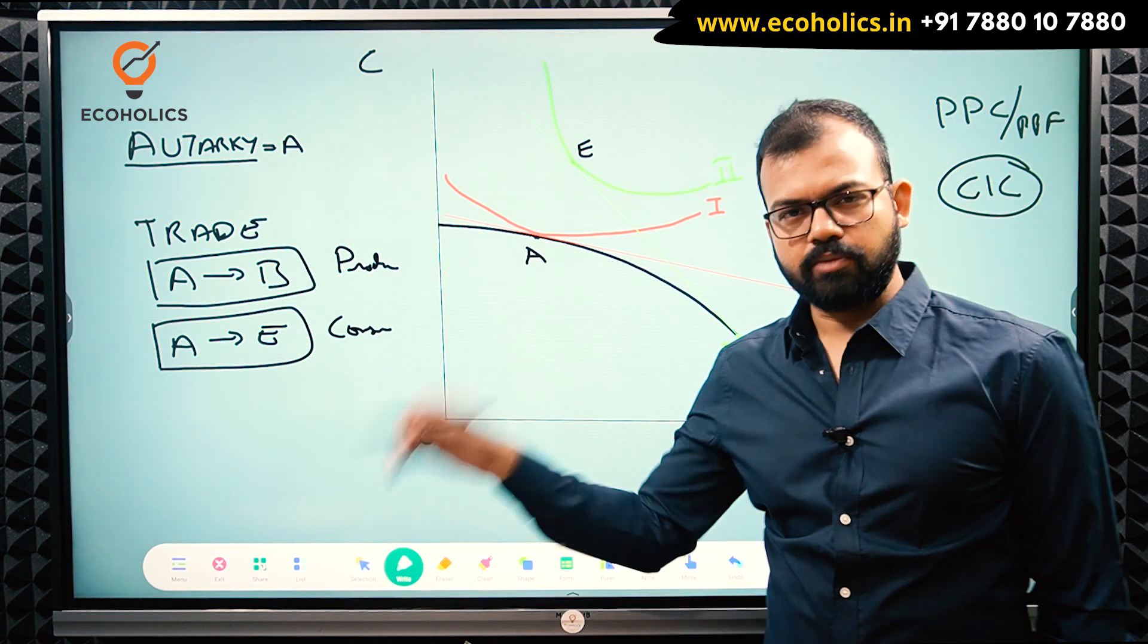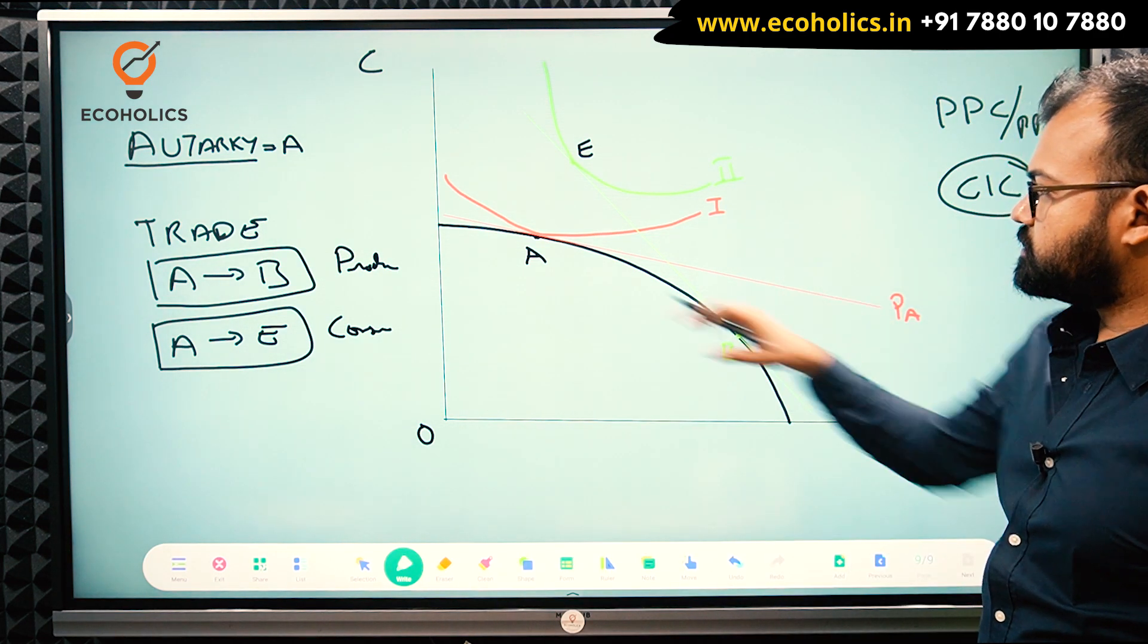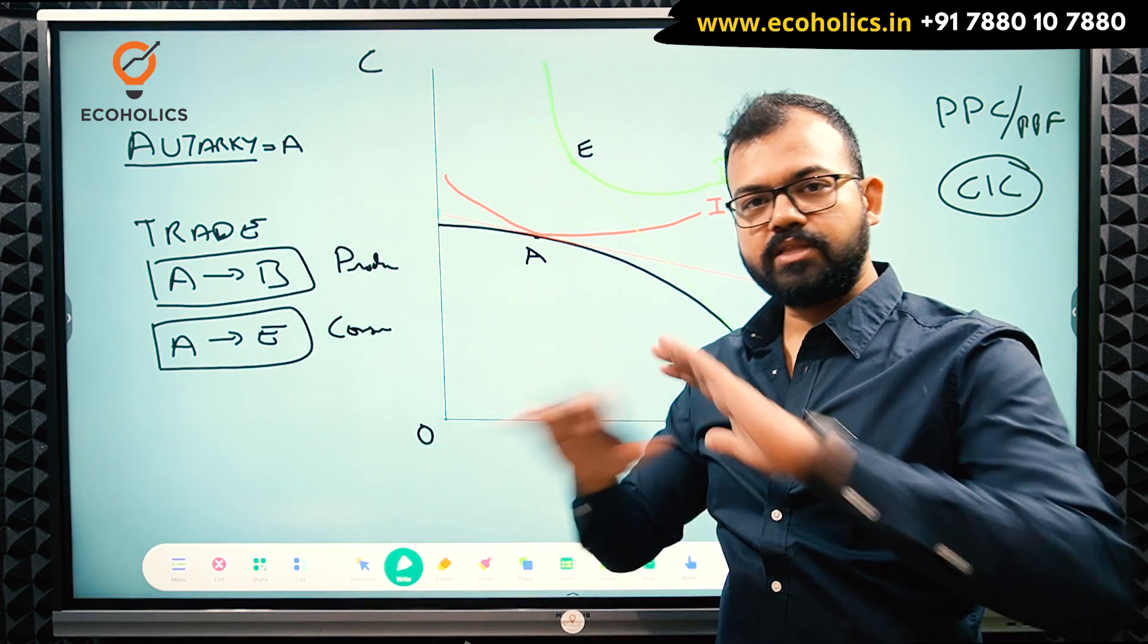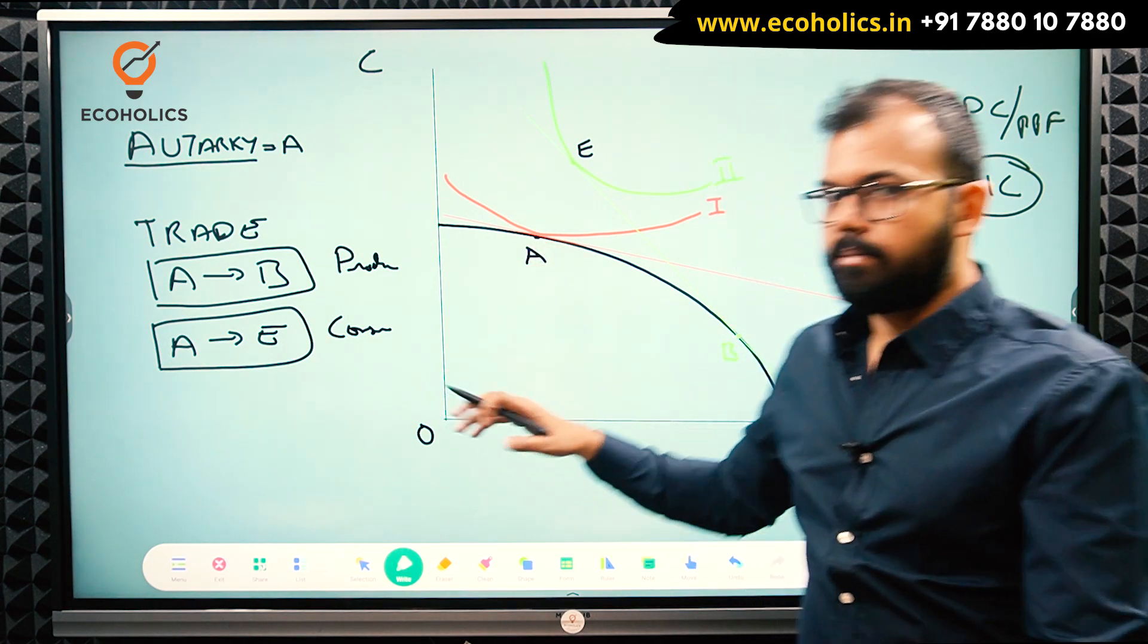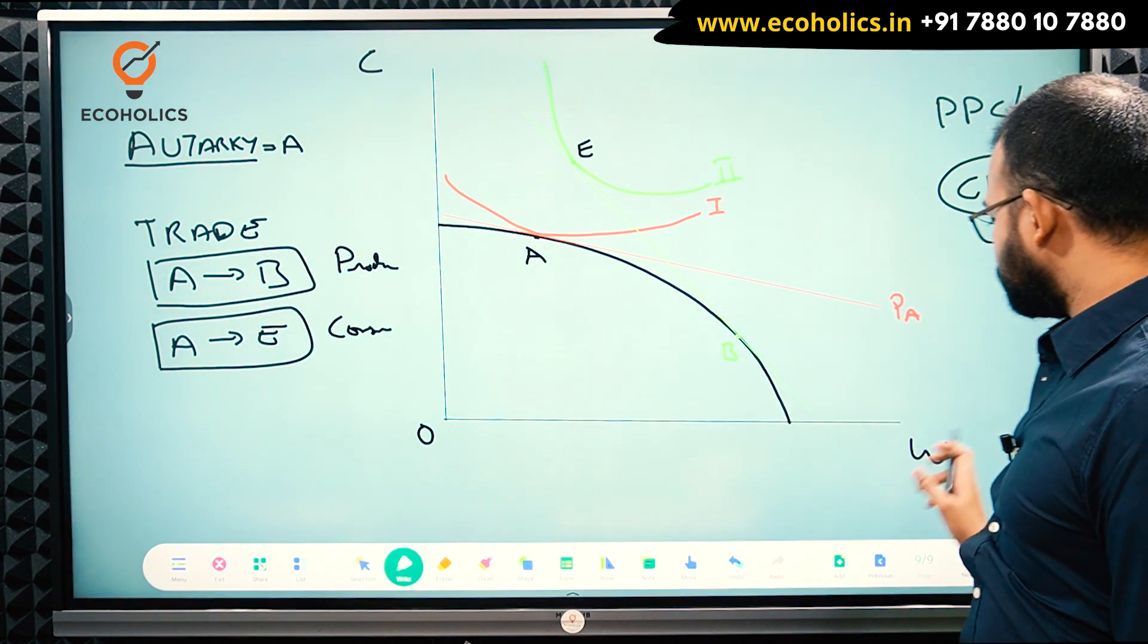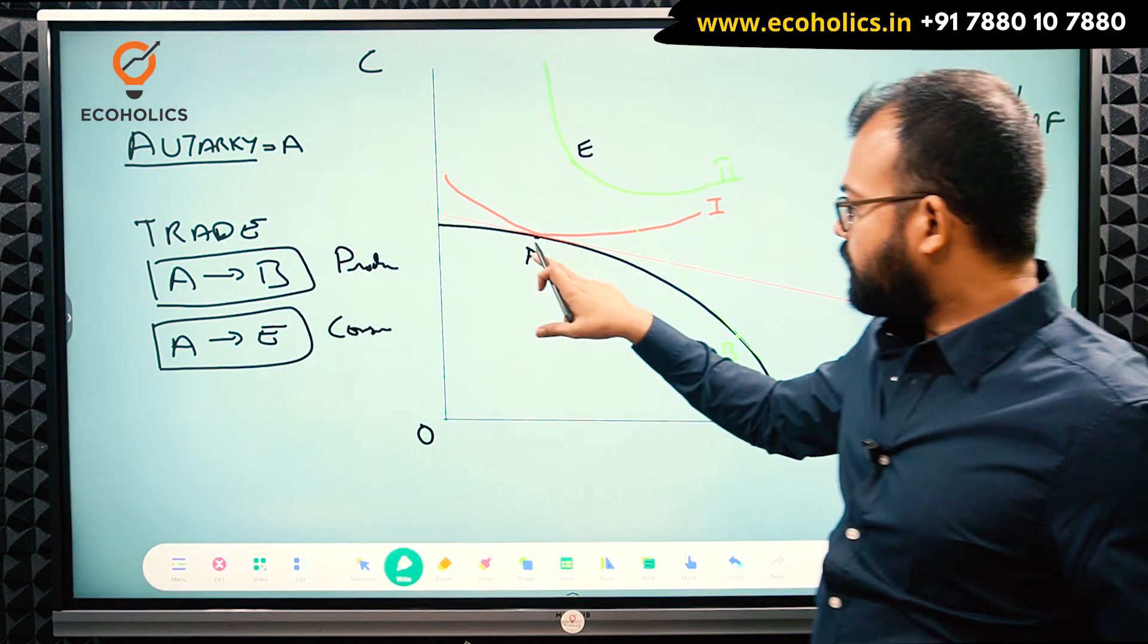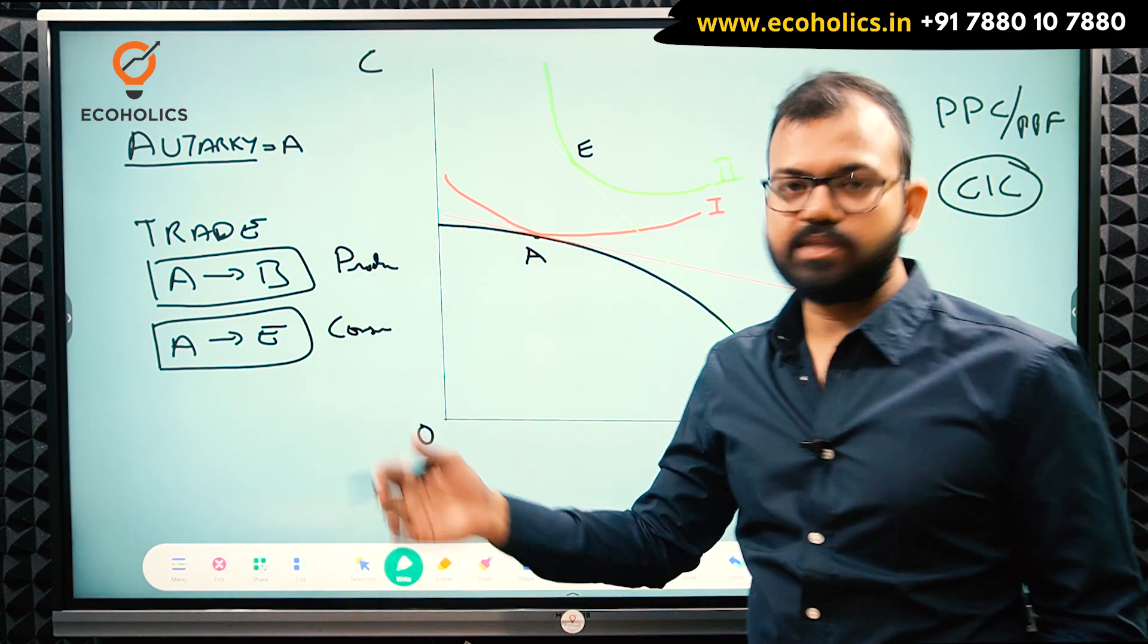You can pause the video and write it in the comment section. Why India cannot produce beyond this black PPC? The answer is simple. But can India consume at point E? Previously at autarky, when India was a closed economy and there was no trade, India was producing and consuming at point A only.